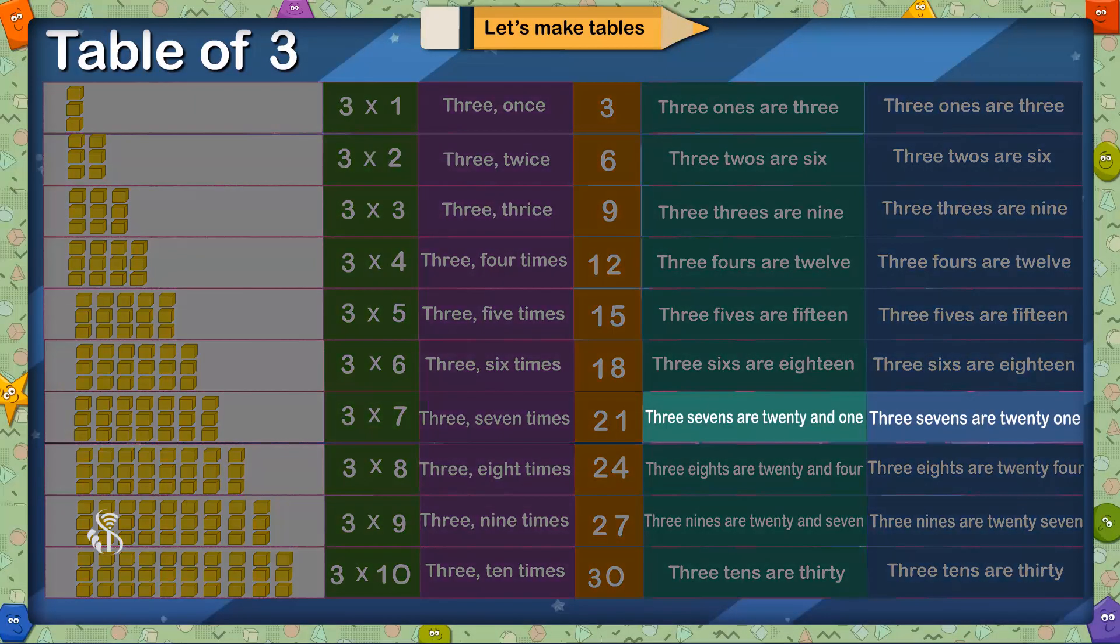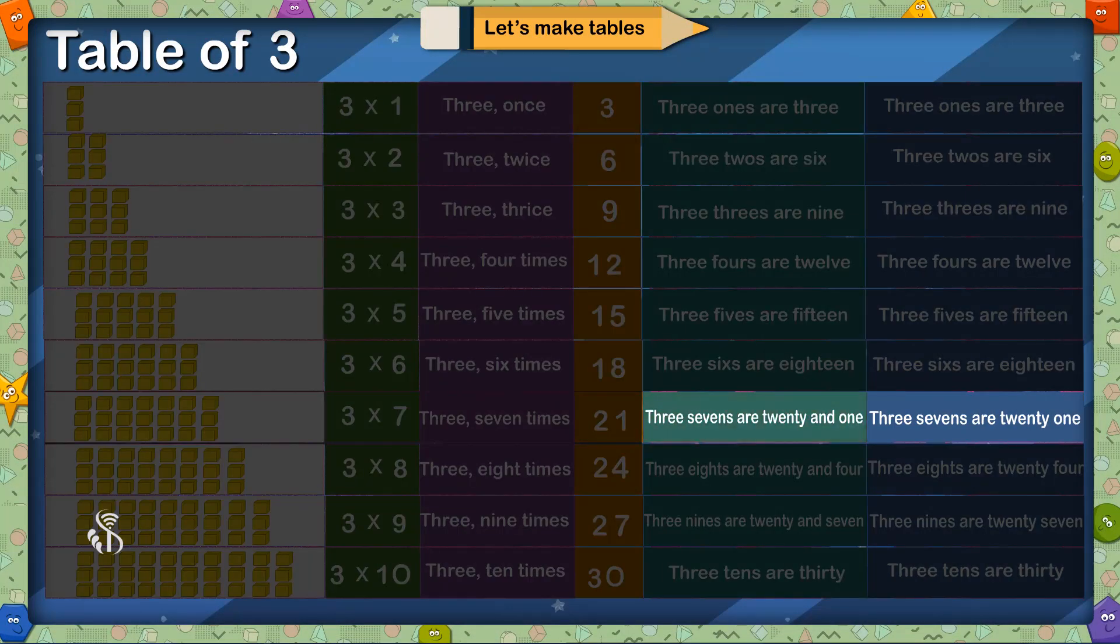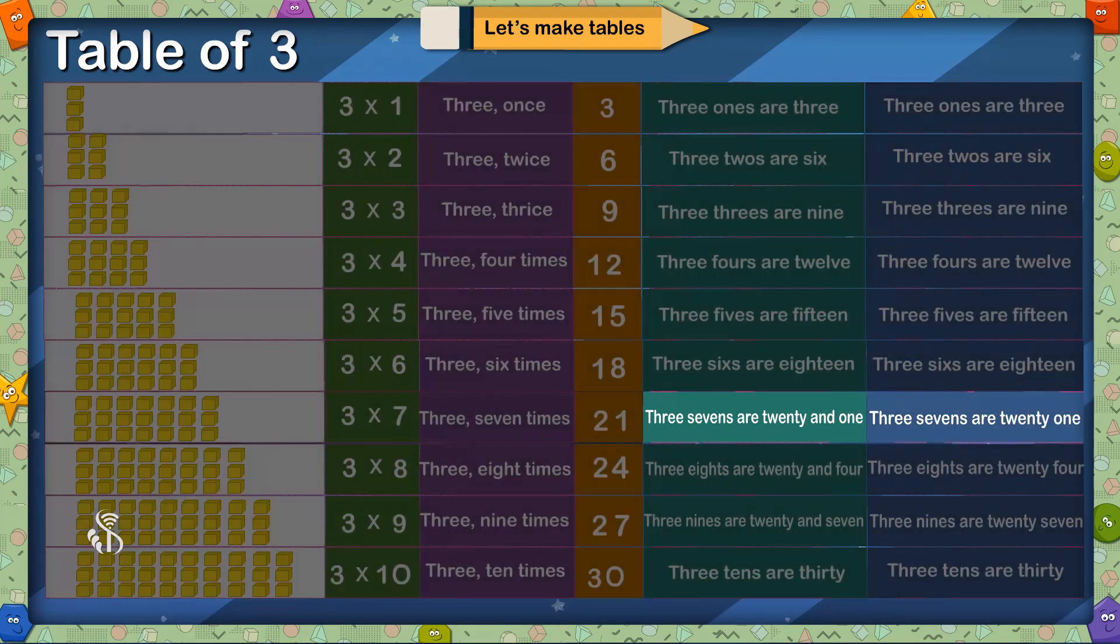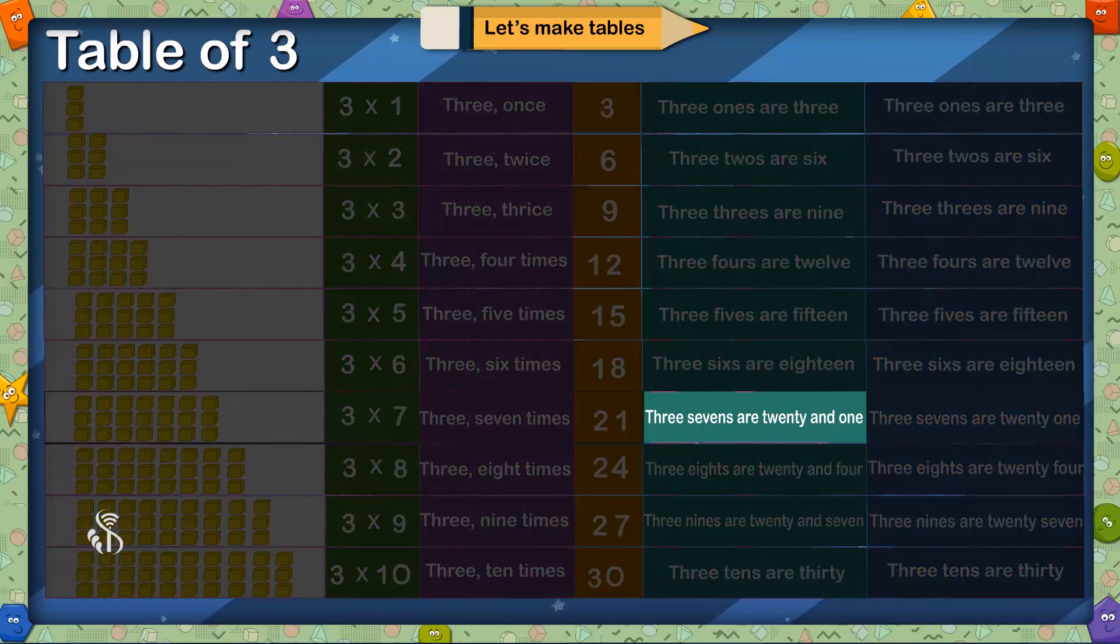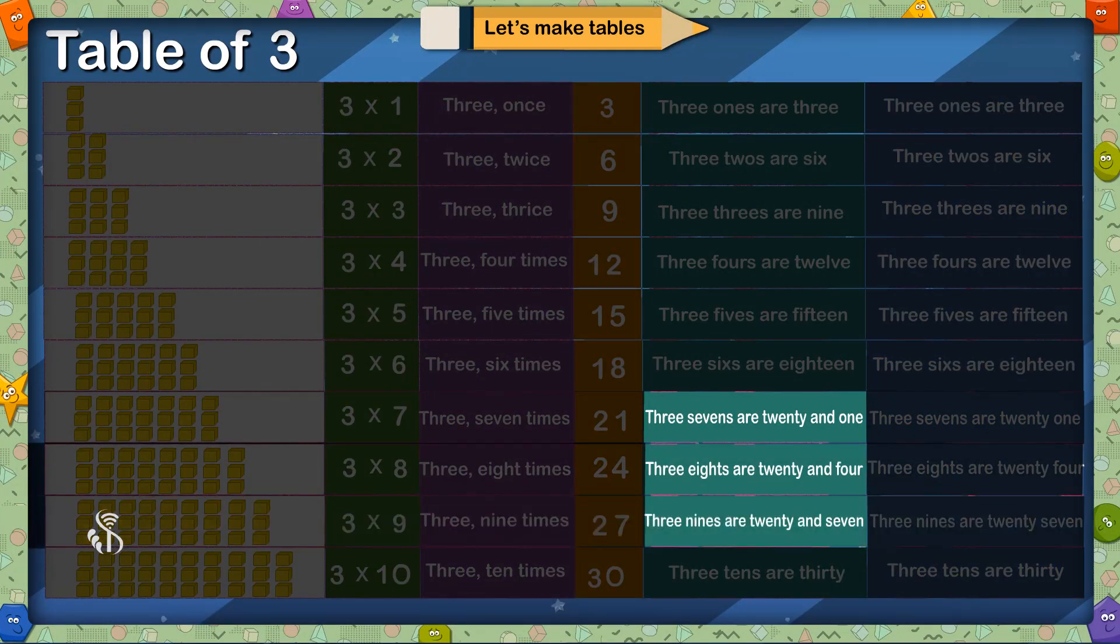While reciting this table, we can either say 3 7 times are 21 or 3 7s are 21. The meaning of both the phrases is one and the same. Therefore, while reciting tables, you will read any one of this. But it is easier to say 21, 24 and 27. So always use this method when you recite your tables.